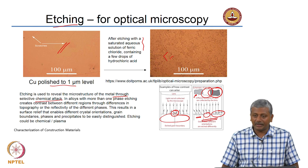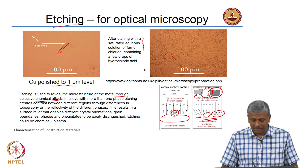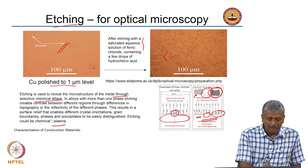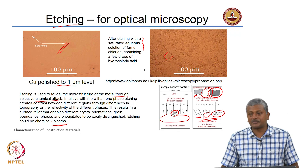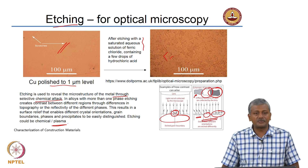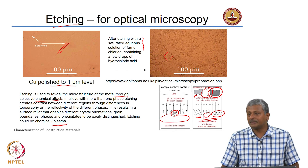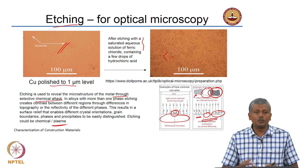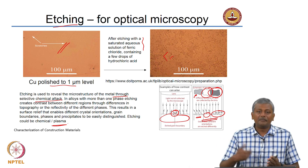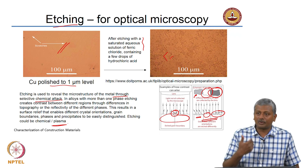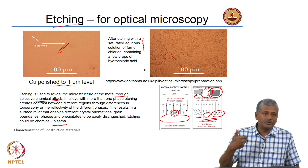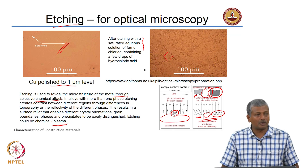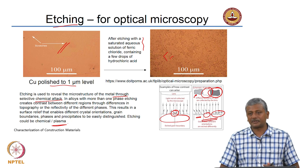Etching can be done either by chemicals or through plasma. In plasma etching, a very high ionic cloud mills or attacks specific faces on the surface of the specimen.